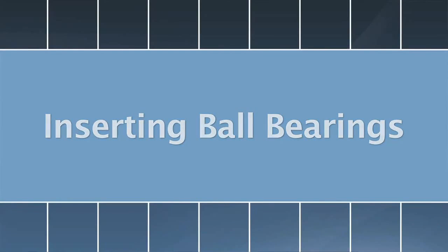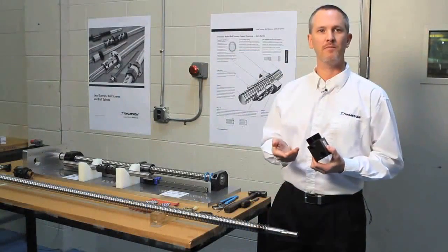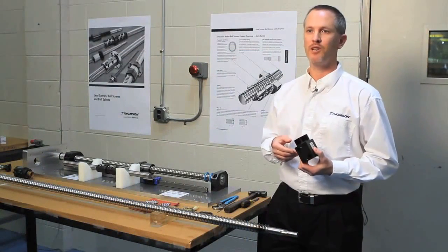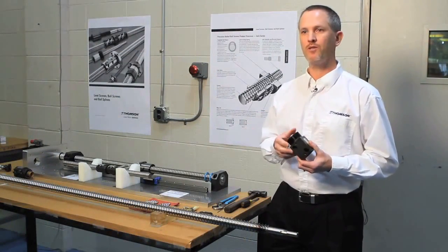Not very uncommon that the ball bearings will fall out. One possible solution is to send it back to Thomson, and we can reload it here at the factory. Or you can do it in your facility on the screw itself.